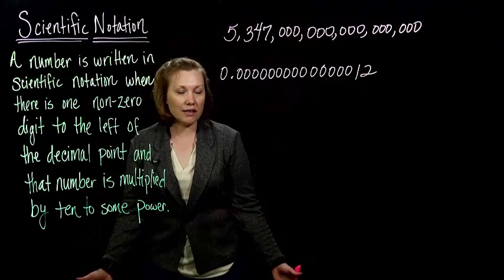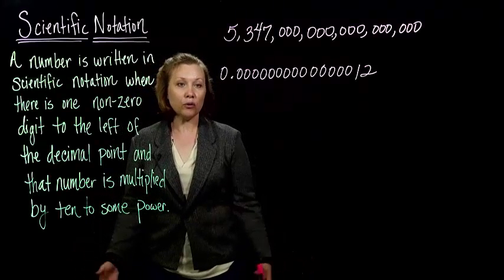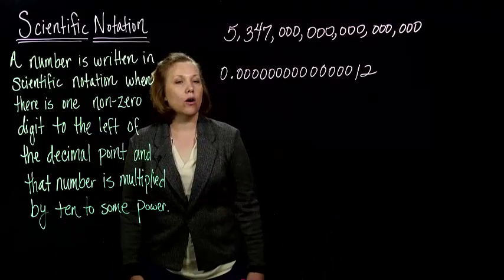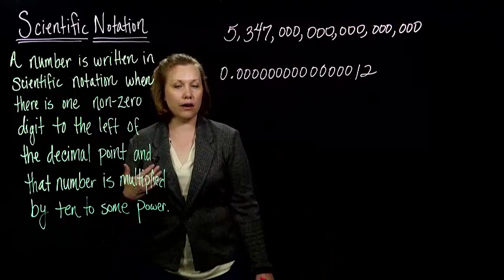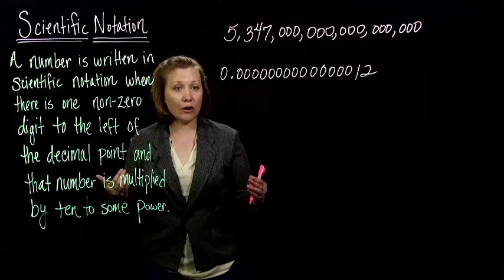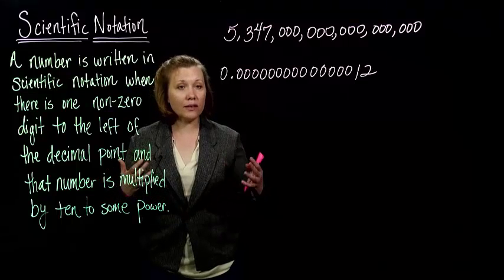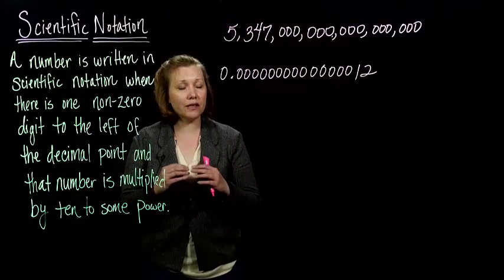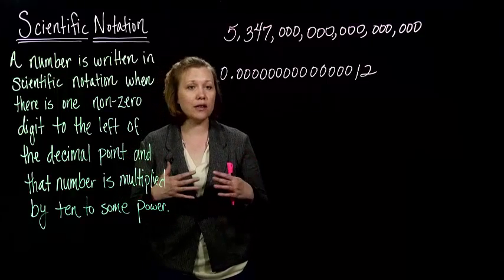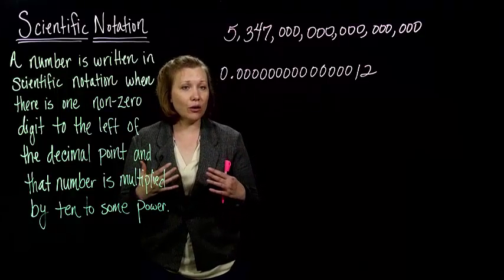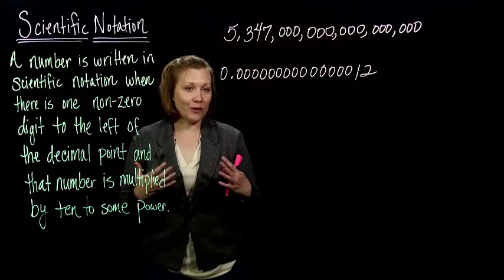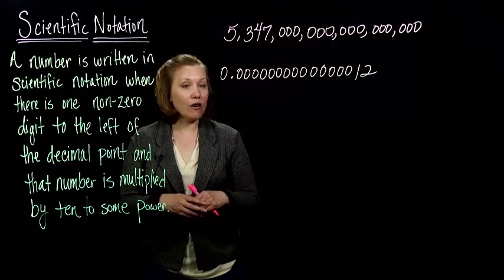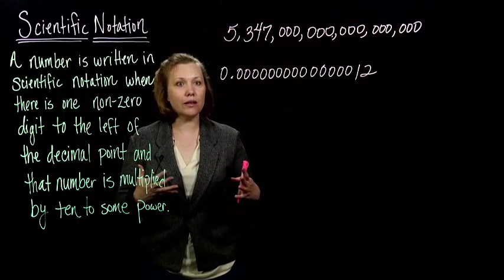The size of the sun — really big, right? It's a huge number. Or the diameter of an atom — an incredibly small number. Very small. In science, we have numbers that we use for things that we've measured or calculated that are either really, really big or really small.